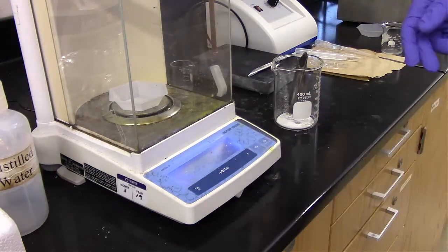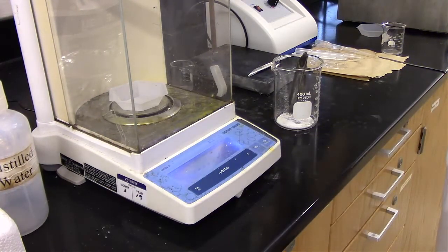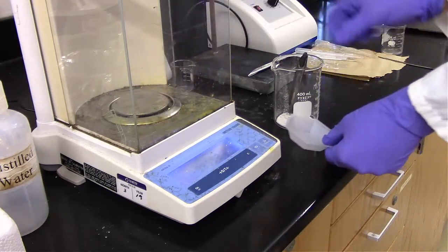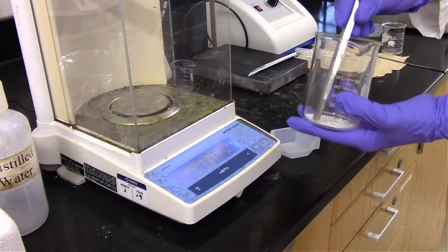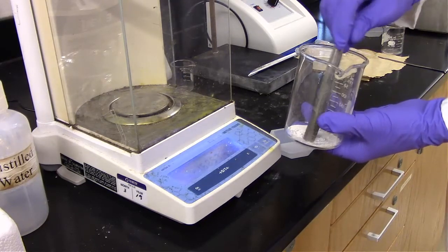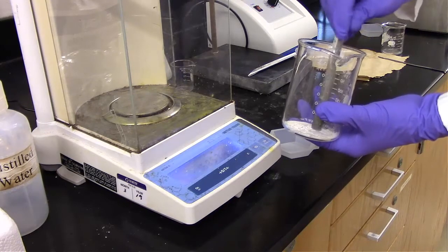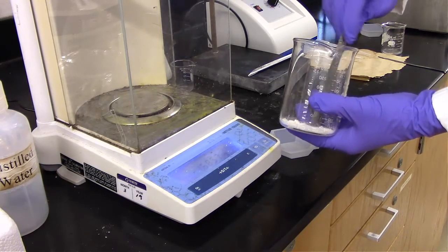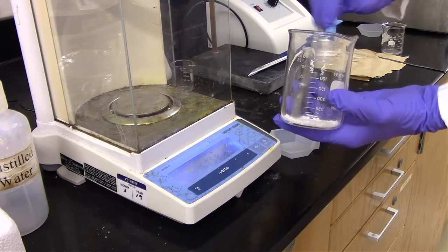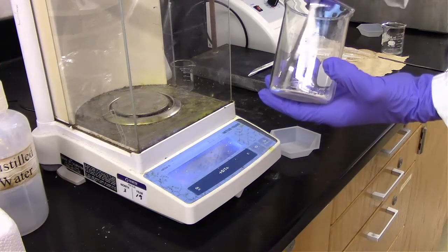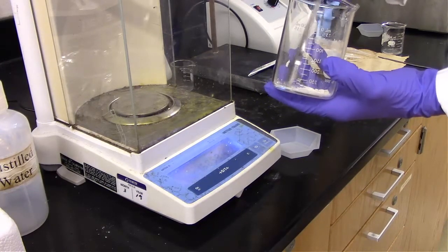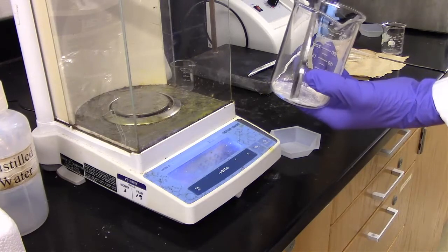And now after the potato was dry, I'm zeroing a weigh boat. And then we are going to scrape off all that starch from the bottom of the beaker. The starch is mostly dry, but it still adheres to that glass a little bit strong, which is what happens after you essentially heat it on an actual hot plate to dry it. We weren't too aggressive with the hot plate, but it is still a little bit sticky.